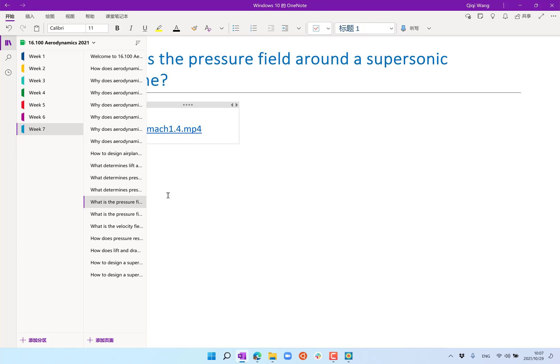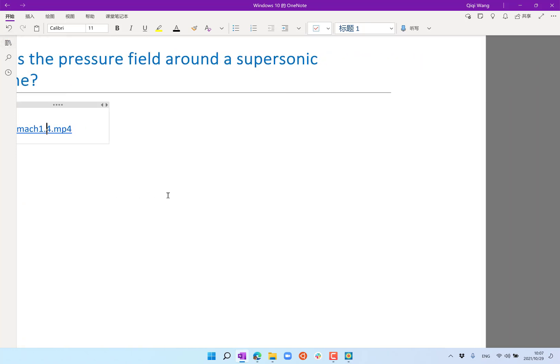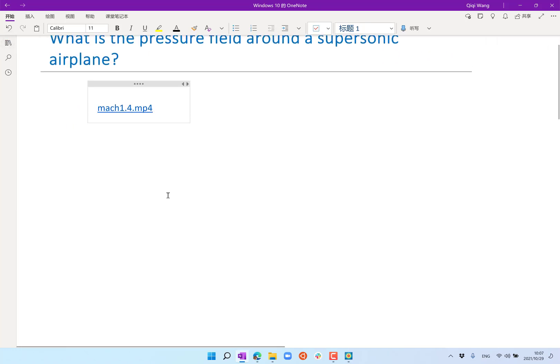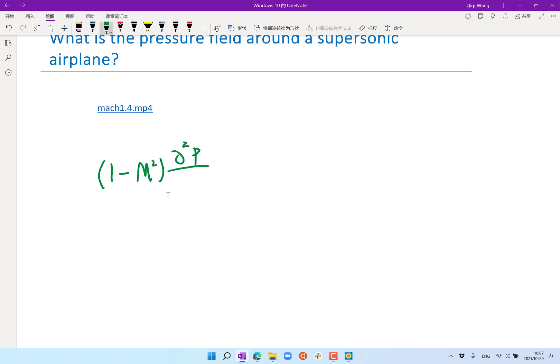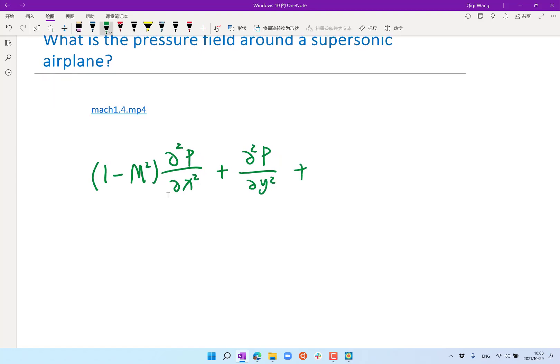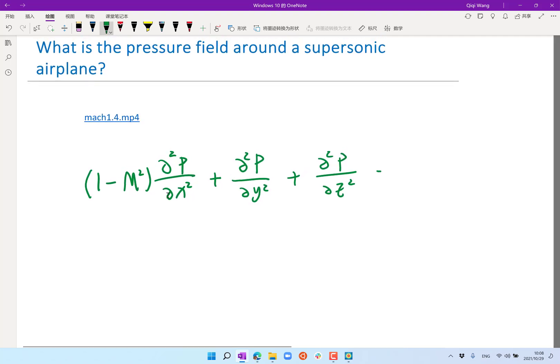All right, so the equations we derived ended up looking like one minus the square of the Mach number times the second derivative of pressure in the x direction, plus the second derivative of the same pressure field in the y direction, plus the second derivative of pressure in the z direction is equal to zero.